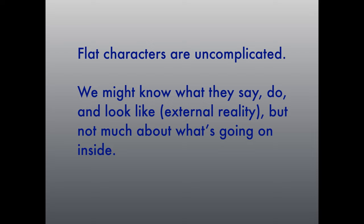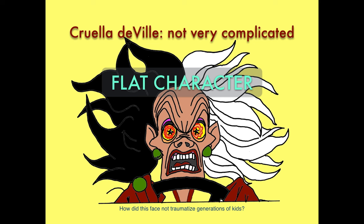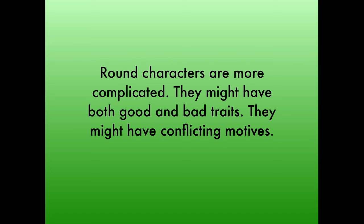Flat characters are not very complicated. Luke Skywalker is a flat character — he's morally good but impulsive, and that's about it. There's nothing wrong with that if that's what you need for the story. Pretty much all of Disney's characters are flat as a cardboard cutout. We know what they say, do, and look like — that's called external reality — but what's going on inside, we don't know that much. Flatness or roundness depends on how simple or complicated a character is, and because Disney characters are written for kids, they're pretty simple.